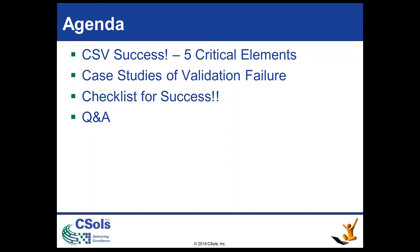So this is our agenda for today. We're going to look at, first, five critical areas to take into consideration in order to achieve computer system validation success, beyond just writing test scripts. With that, we'll look at common mistakes in each area and suggestions and recommendations to correct or, better yet, avoid the issue. Then we'll share a couple of case studies demonstrating similar issues that led to validation failure. Next, we'll wrap up with a checklist — a cheat sheet kind of summary that you can refer back to to keep you on track with your computer system validation. And lastly, we'll have time for some questions.